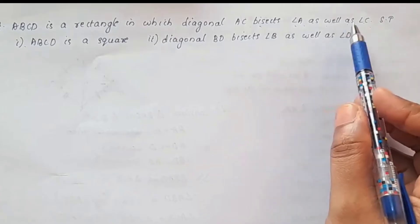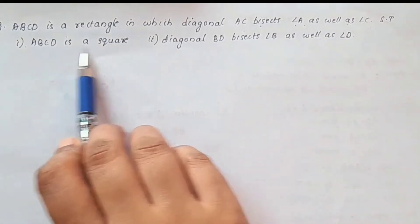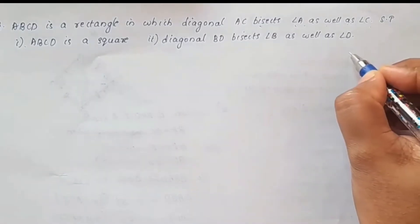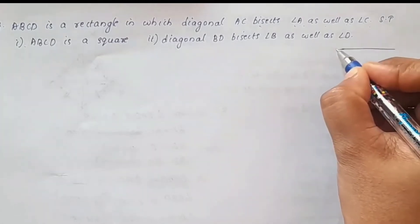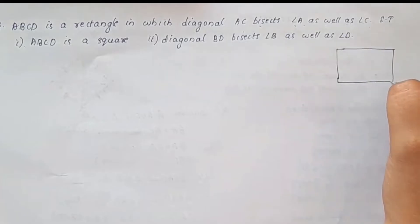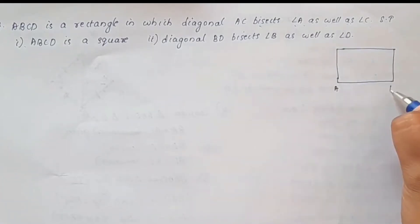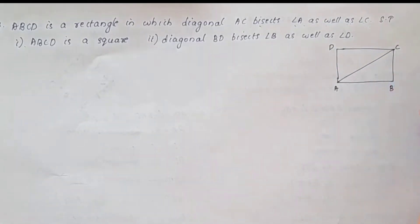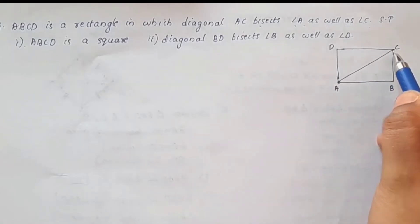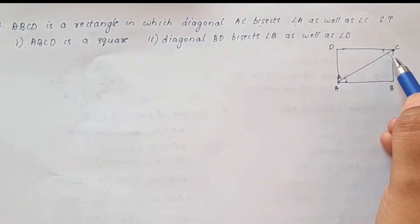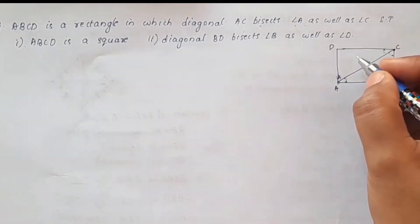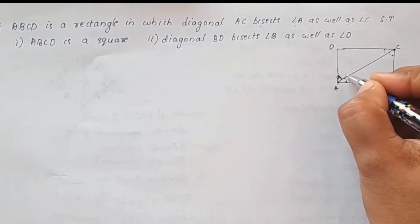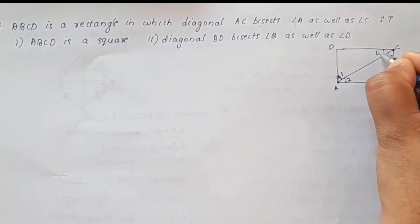We will show you a rectangle ABCD. AC bisects angle A as well as angle C. These two angles — angle 1, angle 2, angle 3, angle 4 — are labeled in the figure.